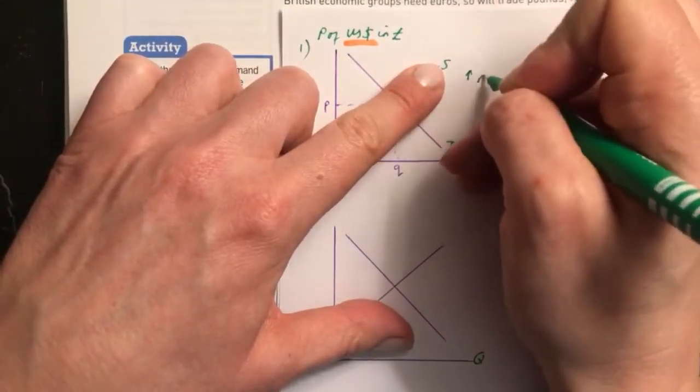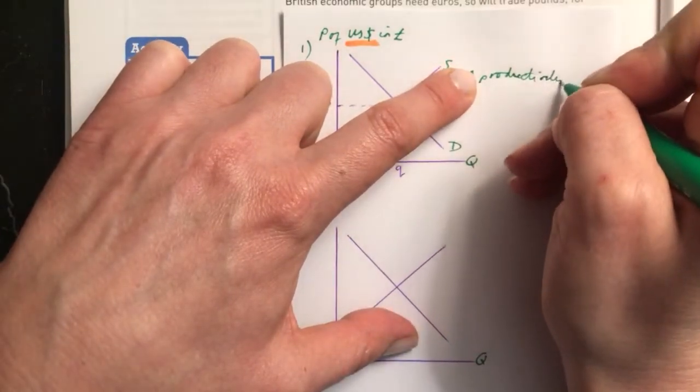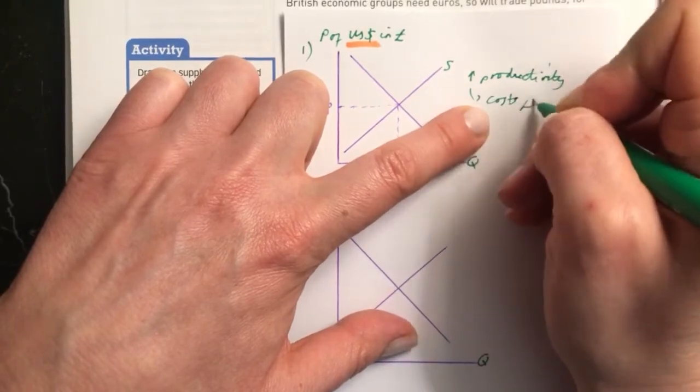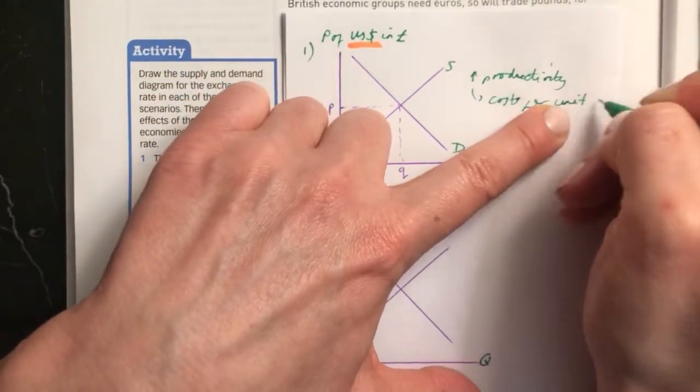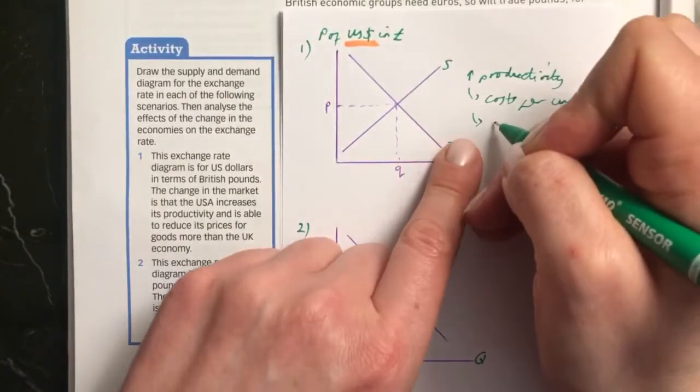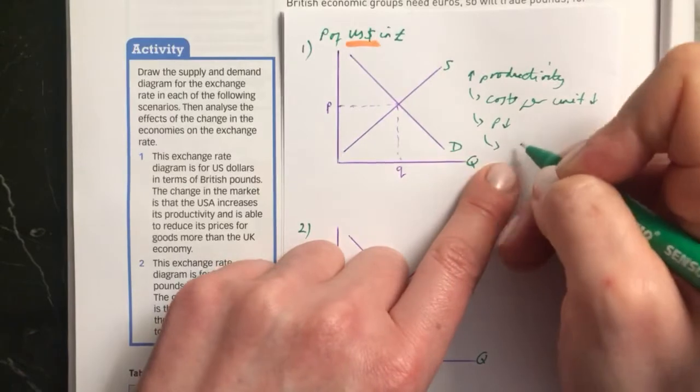If you have an increase in productivity, this will mean that your costs per unit go down. If your costs per unit go down in the US, this means that you can put your prices down.